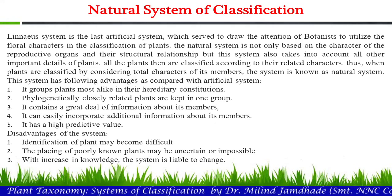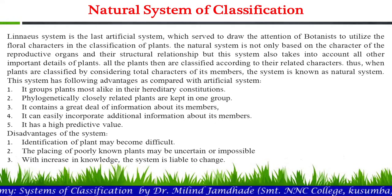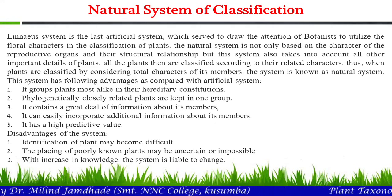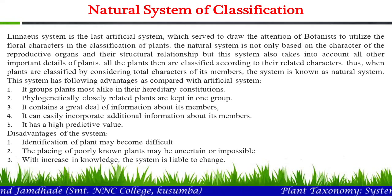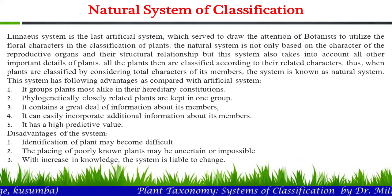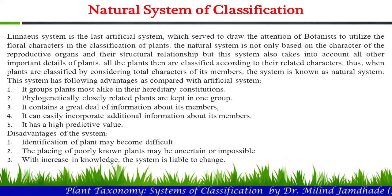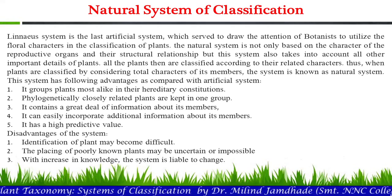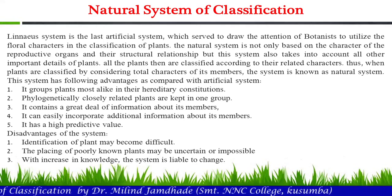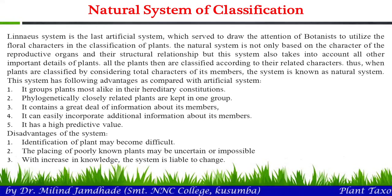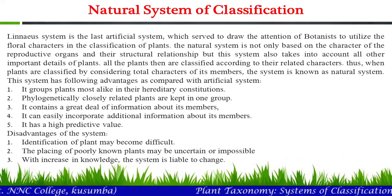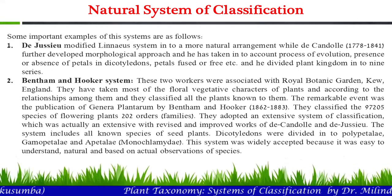The disadvantages of the natural system are: identification of the plant may become difficult; the placing of poorly known plants may be uncertain or impossible; and with increase in knowledge, the system is liable to change. These are some disadvantages of this system.